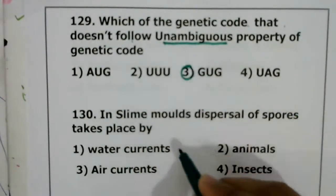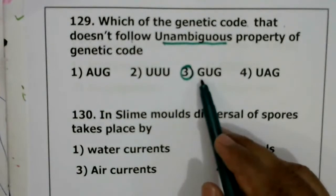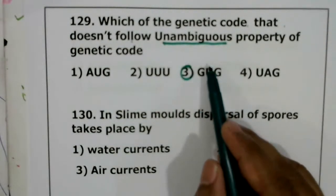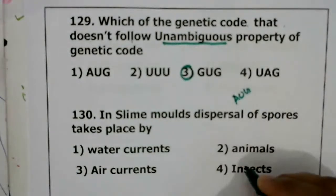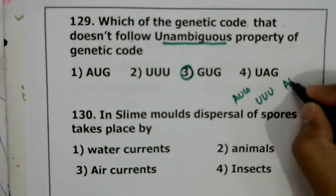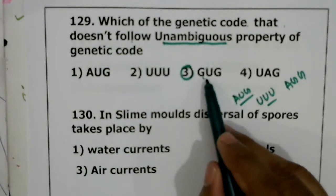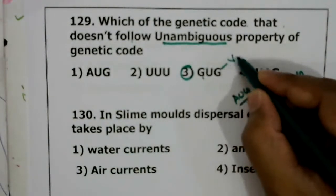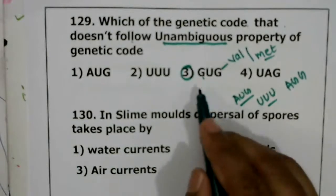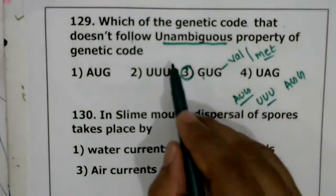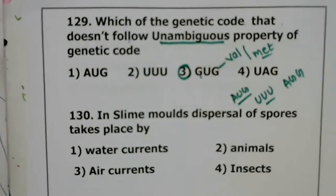Question 129: which genetic code does not follow the unambiguous property? Unambiguous means one particular codon codes for one particular amino acid. GUG normally codes for valine, but sometimes also codes for methionine — the same genetic code coding for two different amino acids is called ambiguity. So GUG is ambiguous, not unambiguous. Correct answer is GUG.